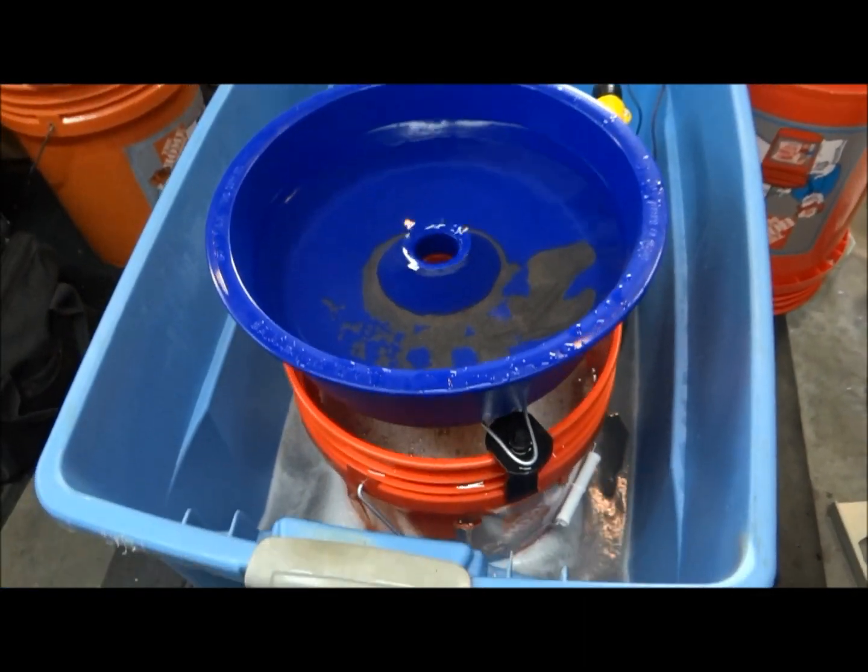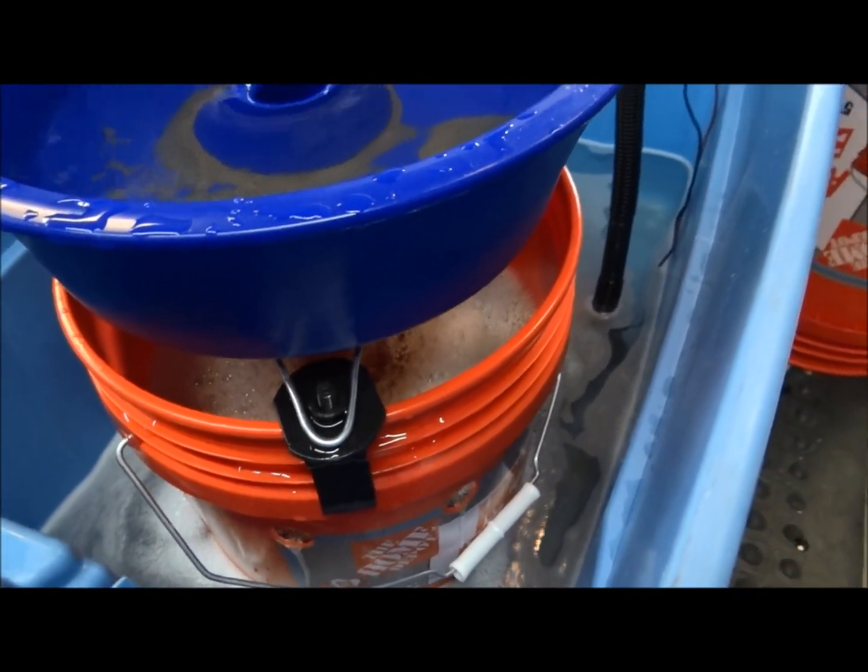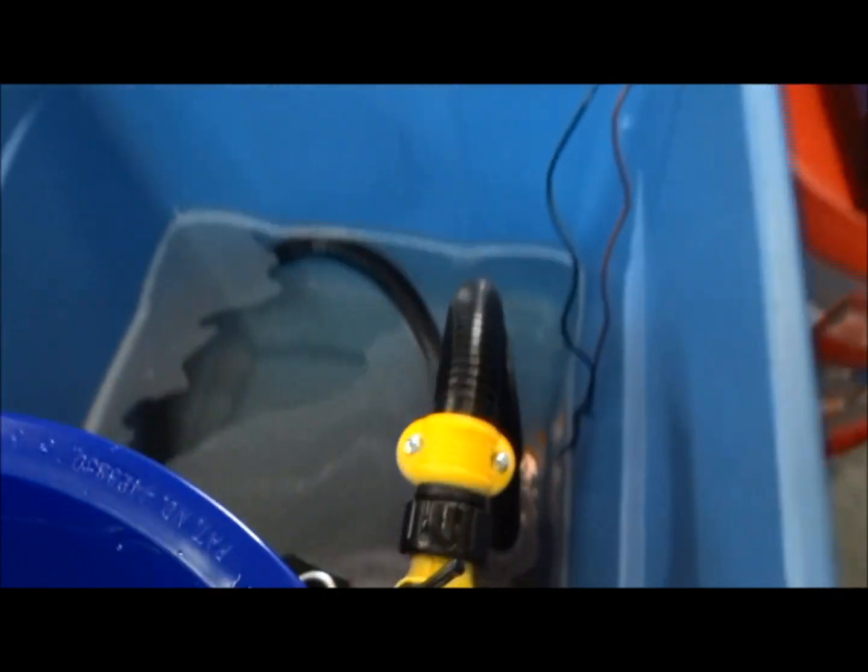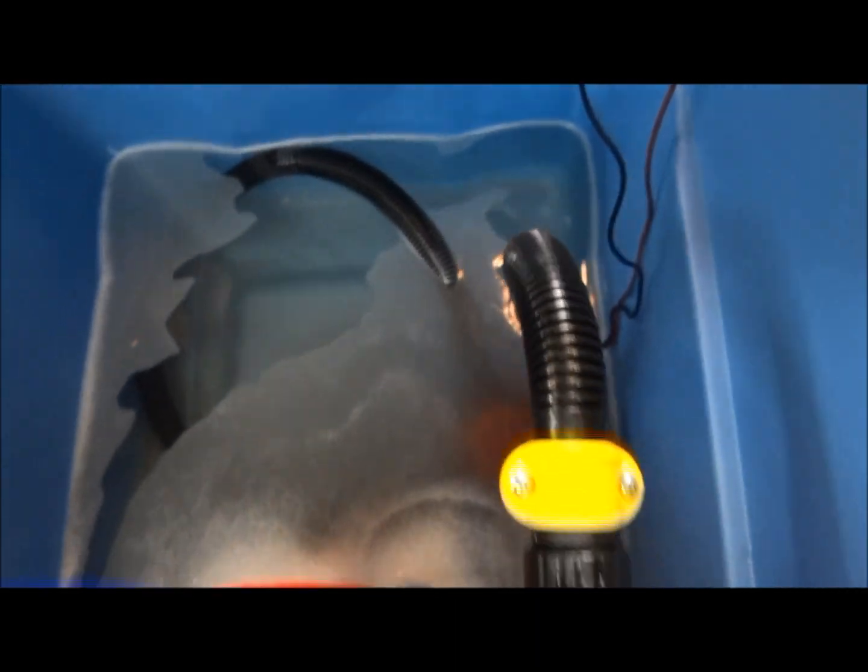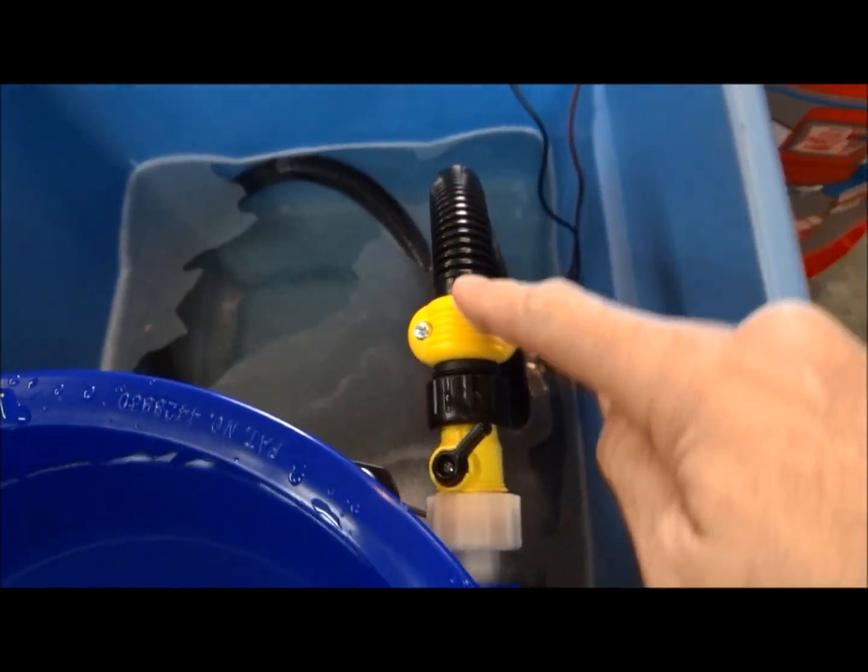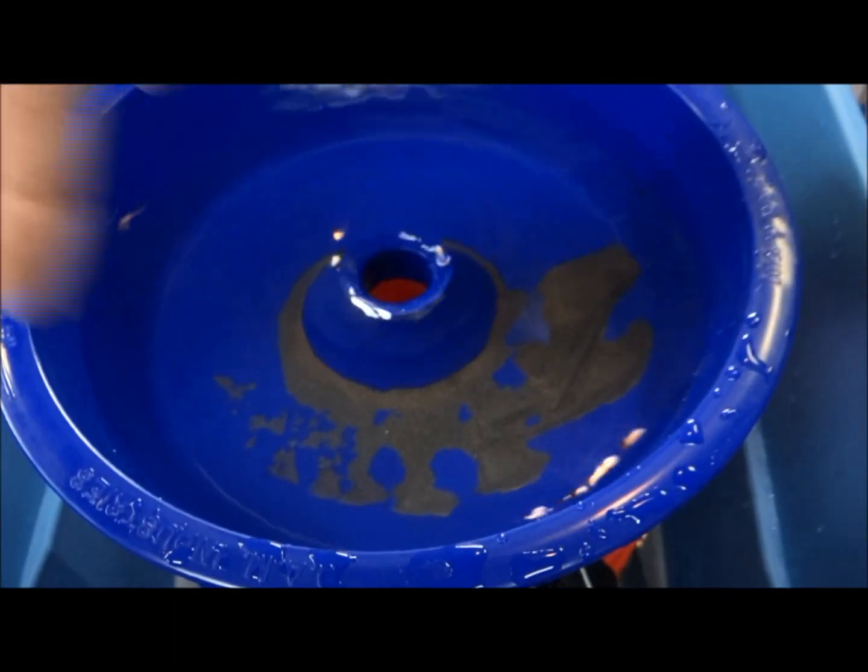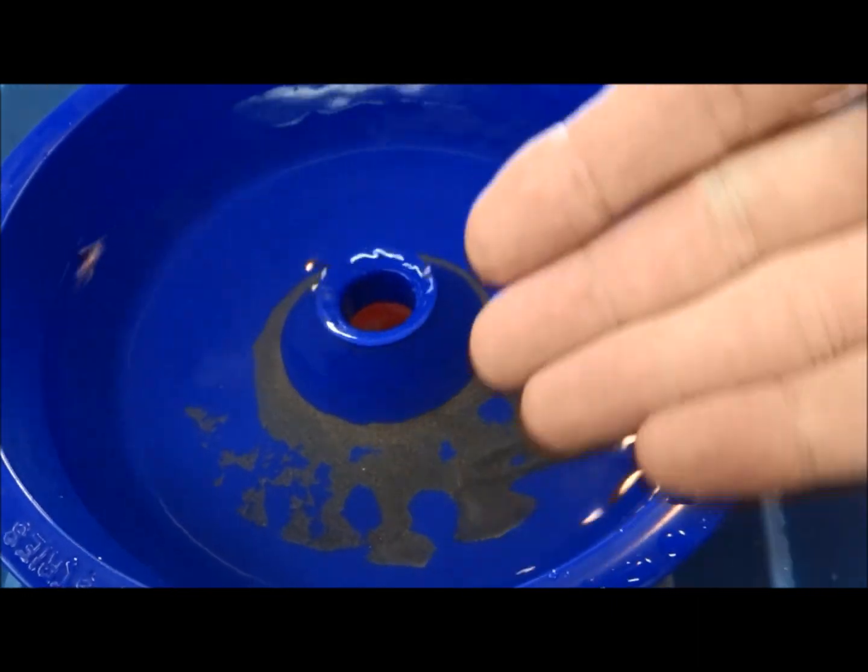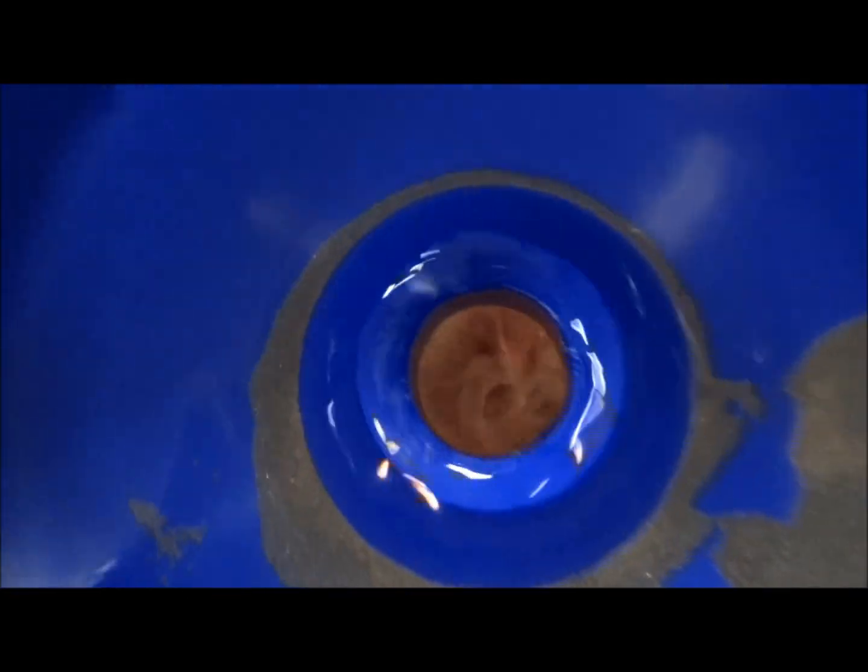this blue bowl which is on my five gallon bucket there, and then there's a pump down in the water, that red thing. It pumps the water up through here and then it comes out that little hole right there. It circles around and all the lighter stuff goes down into that hole.